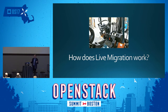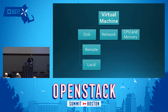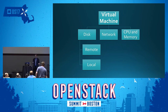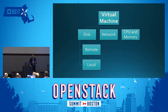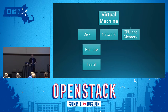How does live migration work? I wanted to delve into this. I'm going to start with a look at what makes up a virtual machine — just to make sure we're all using the same words for the same things. The virtual machine has a networking connection, CPU and memory, and disks. Some of the disks may be local on your hypervisor, and some of the disks are remotely connected. That's the place we're starting from.